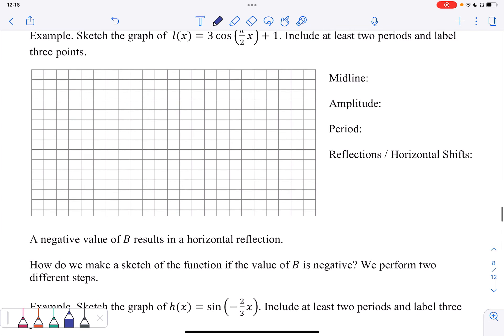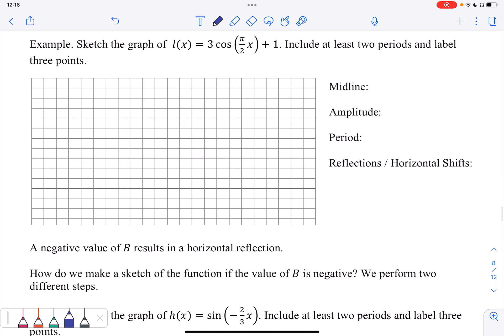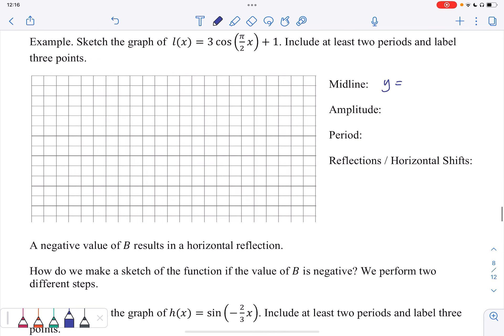So let's look at an example. Sketch the graph of h(x) equals 3 cosine π over 2 x plus 1. Include at least two periods and label three points. So even though this is getting hairier and hairier as we go, I'm still going to use these little notes on the side. So my midline is y equals 1. My amplitude is 3. The period, well, that's just 2π divided by, it's the piece that would be multiplying by the x. I see π over 2 in there. So this is π over 2. This looks a little weird. Write it like this. 2π times 2 over π. It's going to make it easier. It gives me 4.